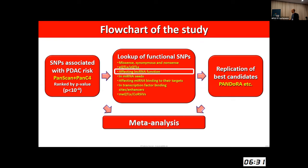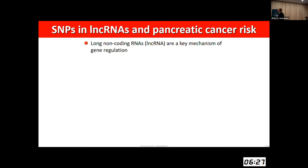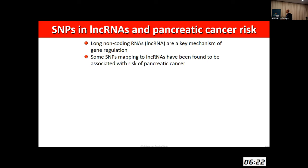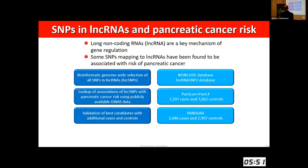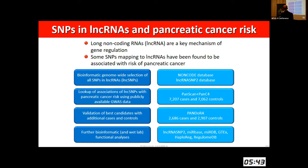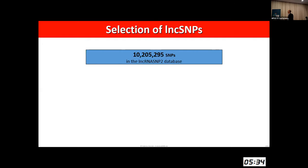I'll give a couple of examples. First, SNPs predicted to affect long non-coding RNA function. We know that long non-coding RNA is a key mechanism of gene regulation, and there are already some examples of SNPs in this category associated with risk of pancreatic cancer in general. We used a couple of publicly available databases to locate known long non-coding RNA loci in the genome and identify where SNPs are located within them and what they are predicted to do.